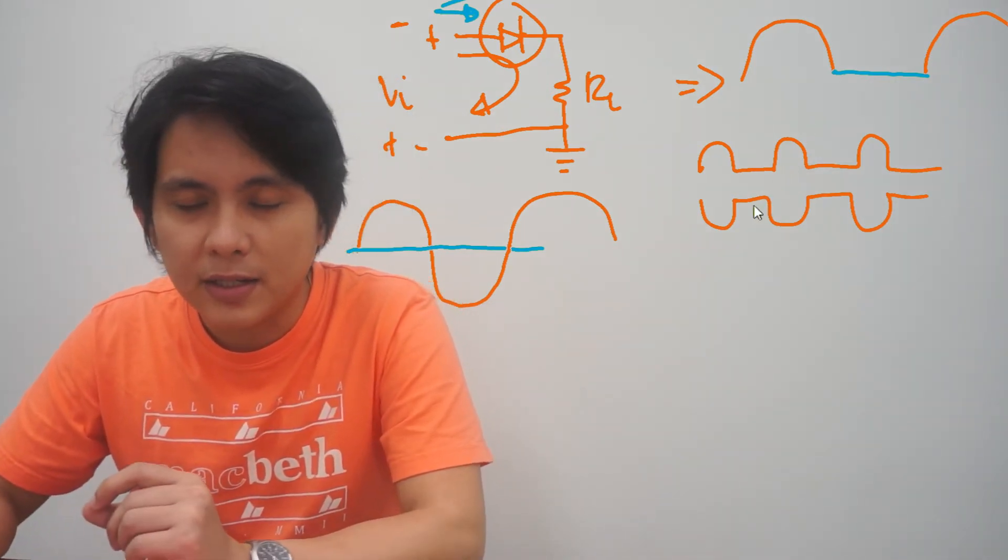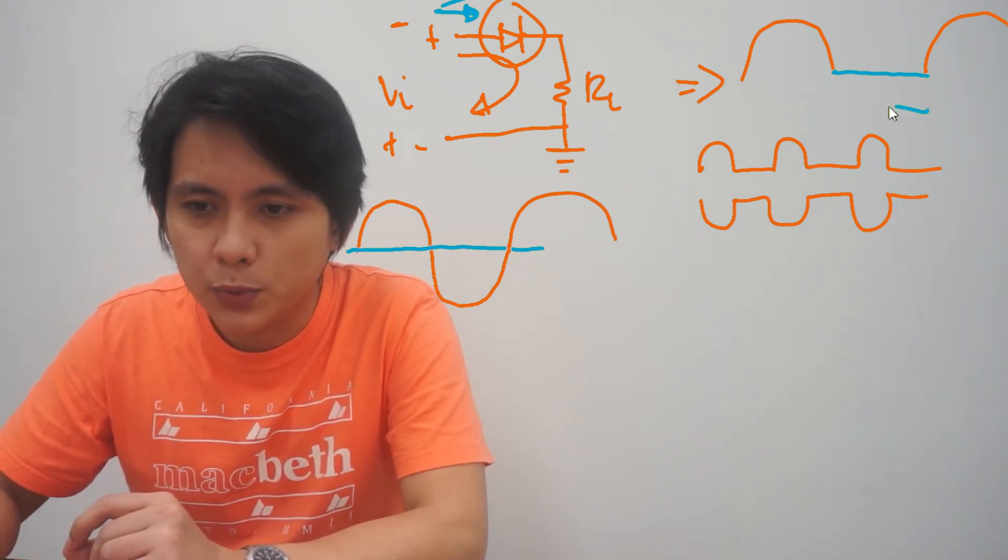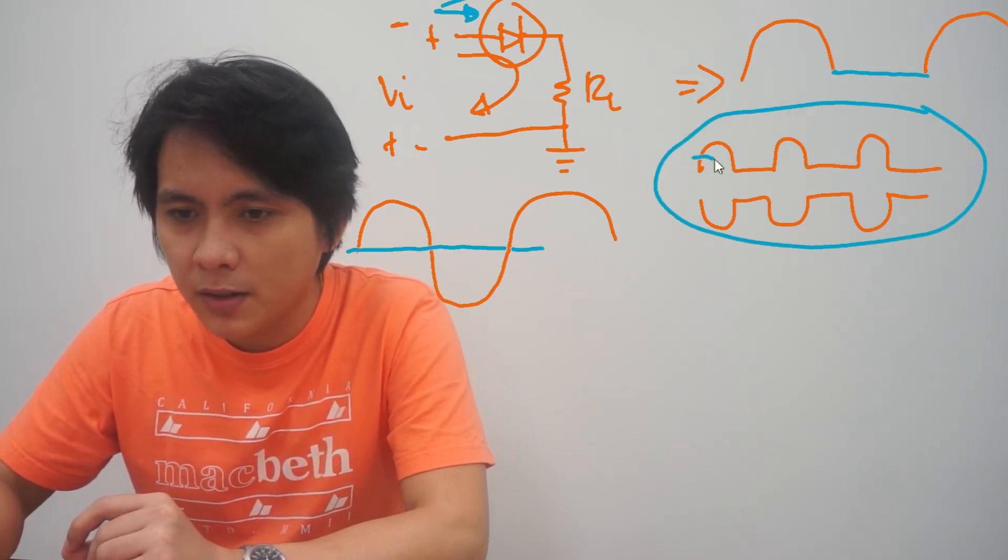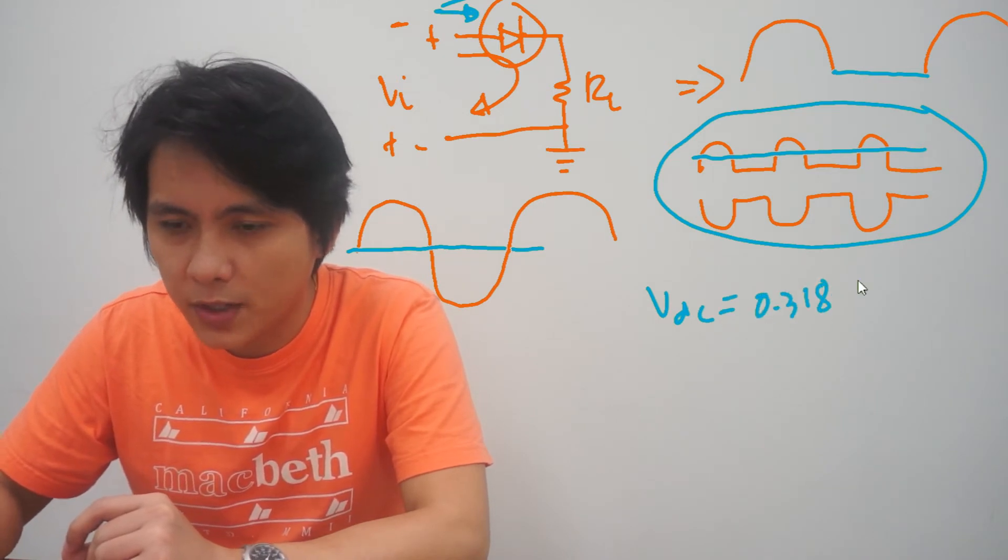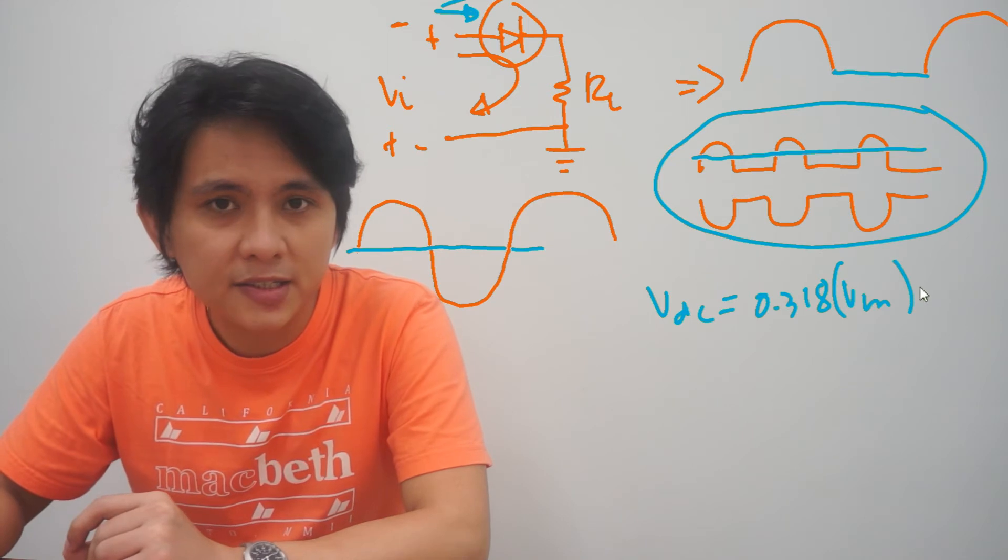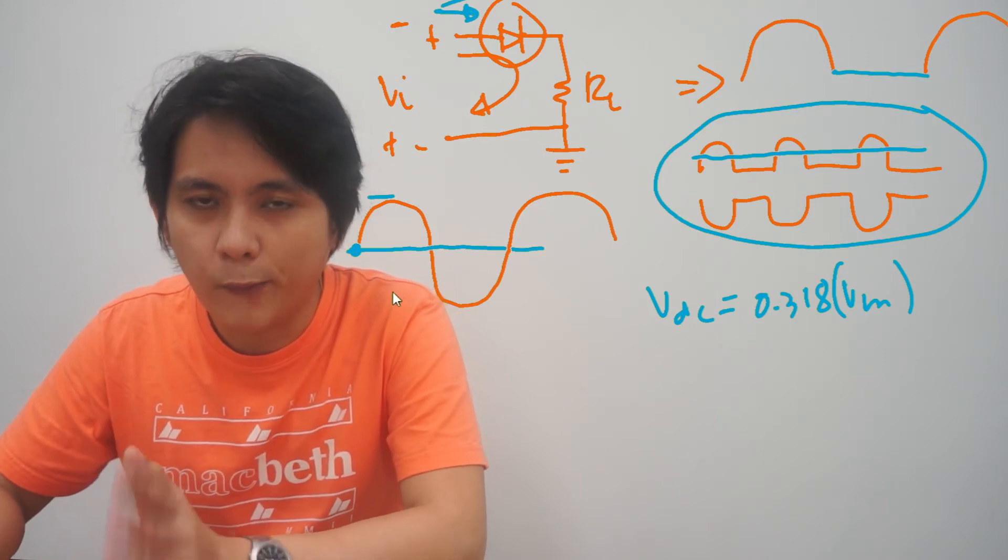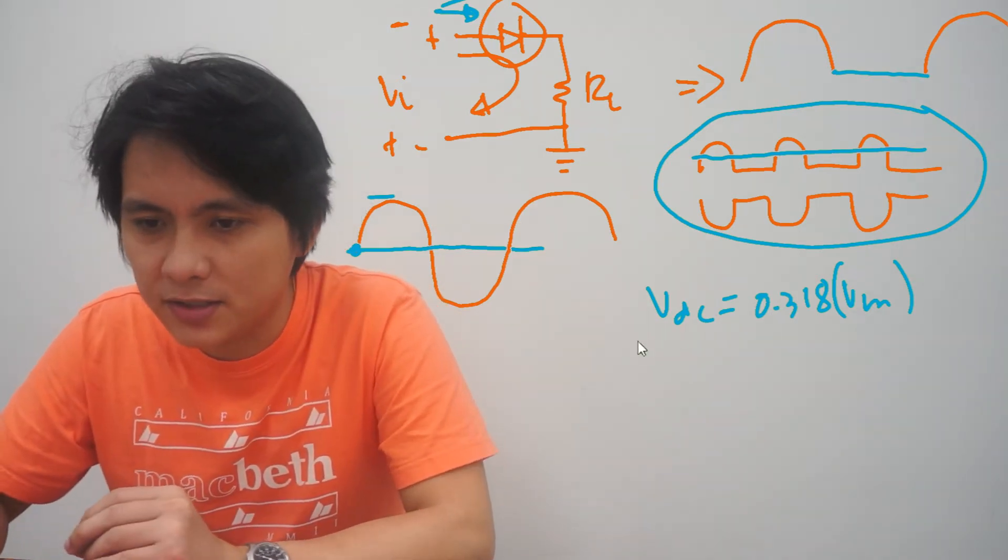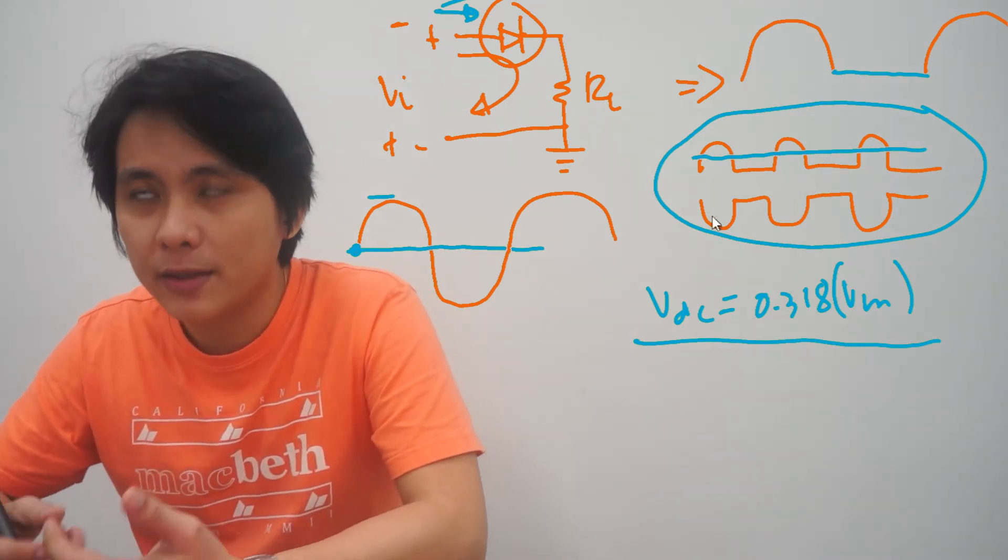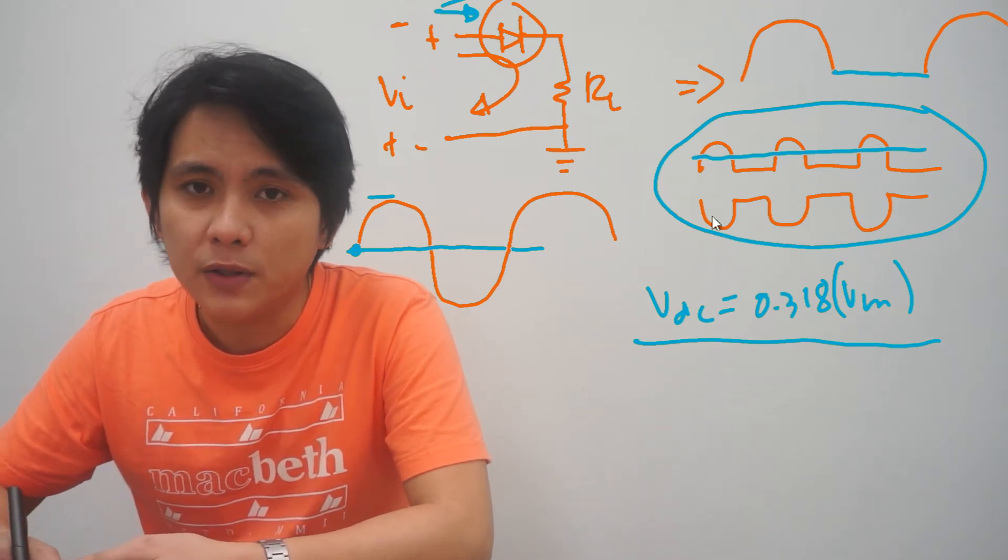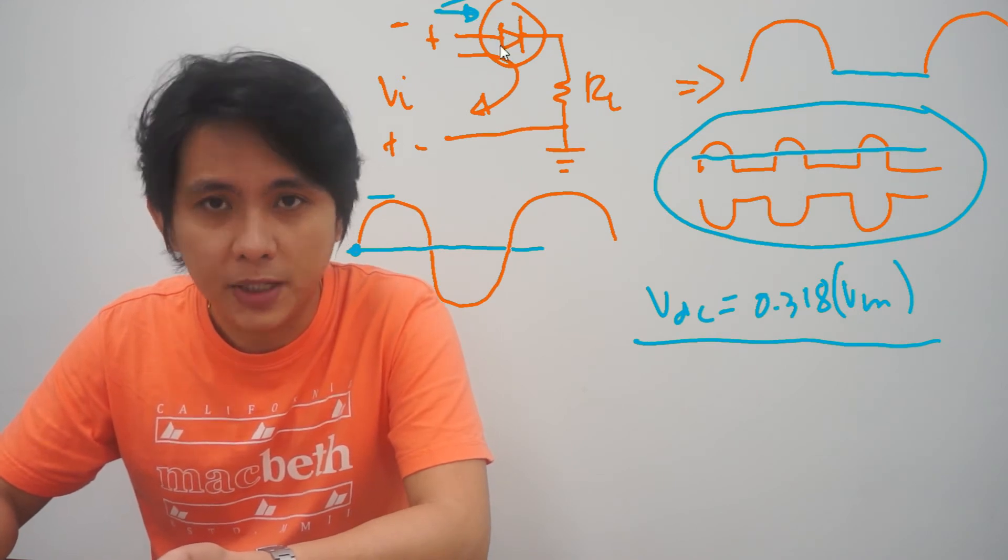To get the average DC voltage for this output wave right here, the average DC is equivalent to 0.318 of the V max, measured from here up to the top of either the positive or the negative wave cycle. So this is the V DC. If we want to get a more accurate reading of the V output and the V DC, we have to consider the threshold voltage of the diode being used.